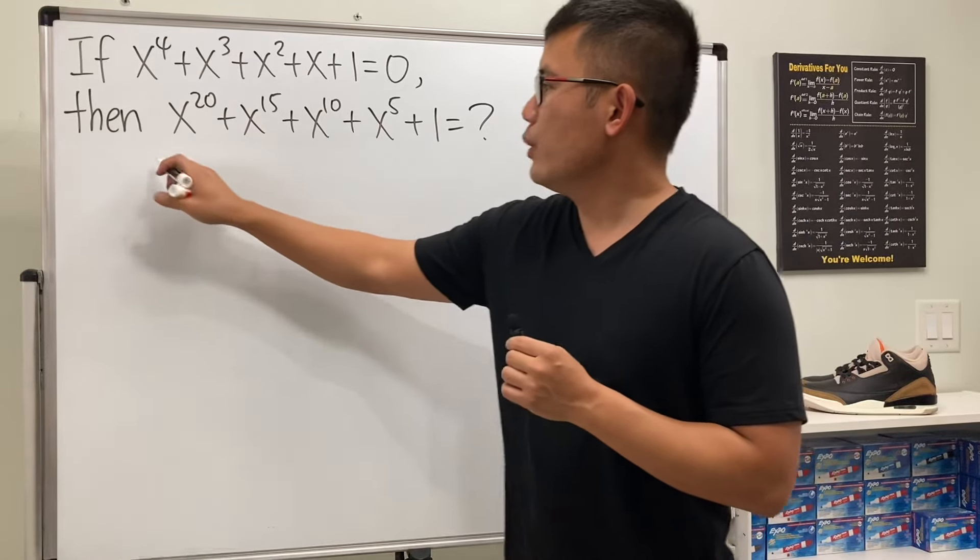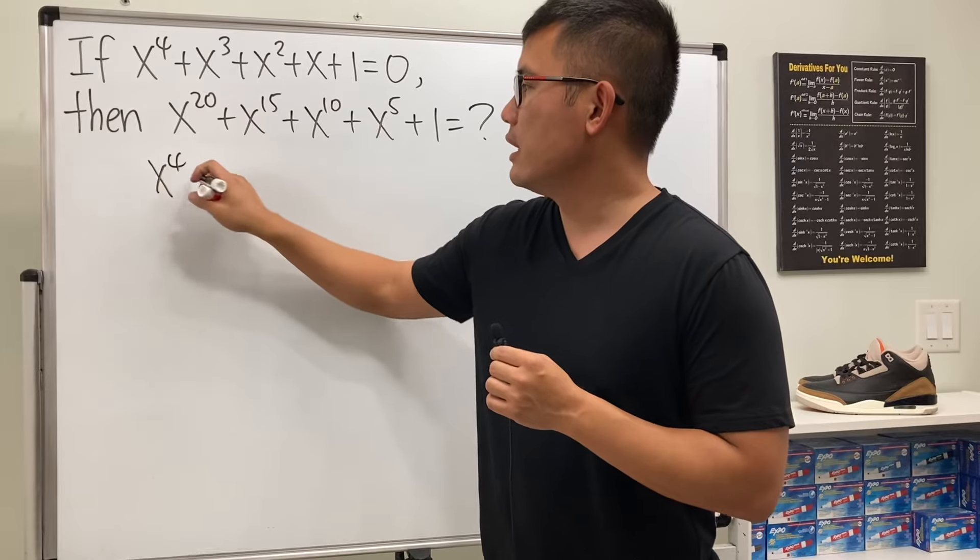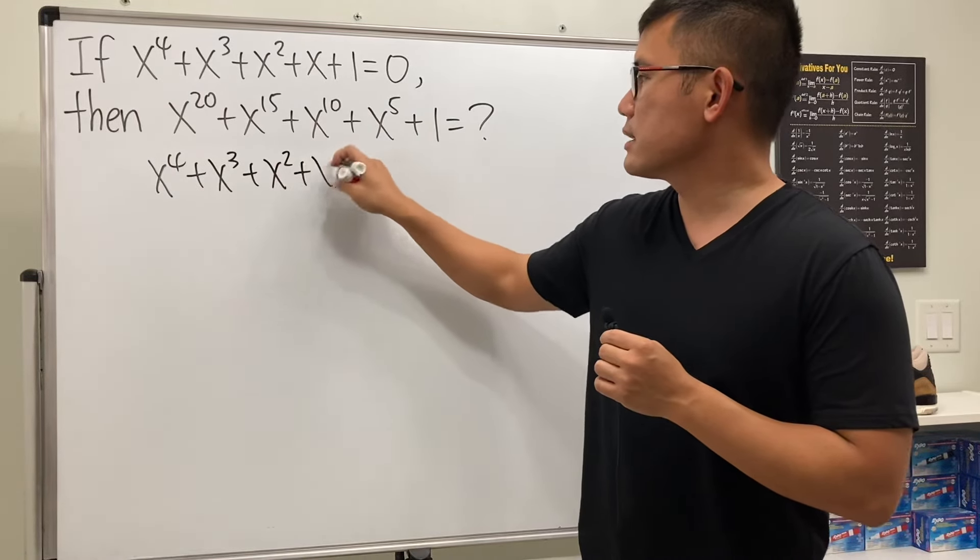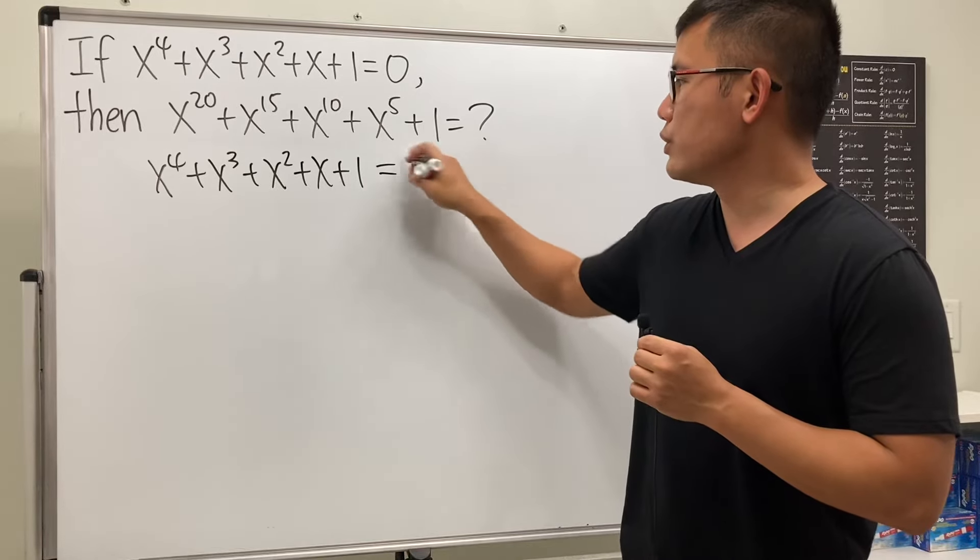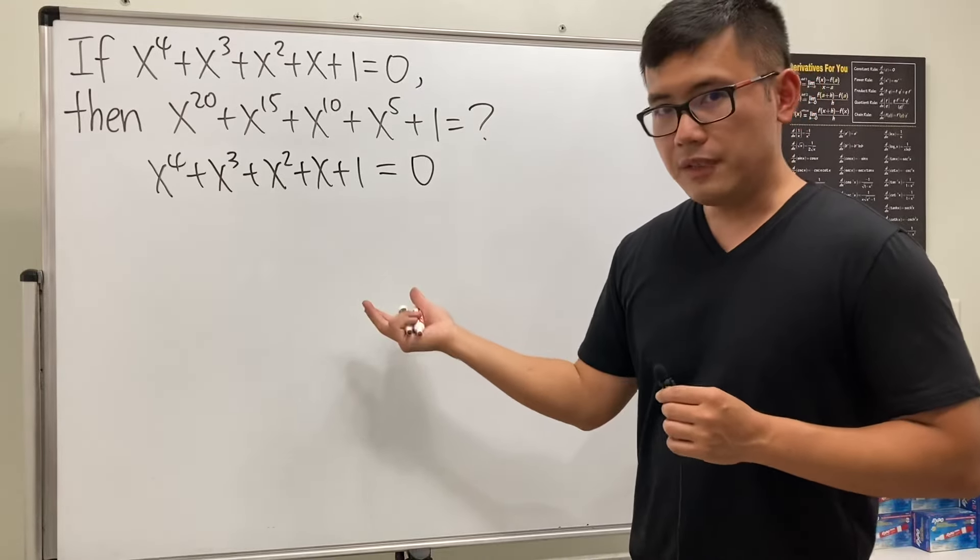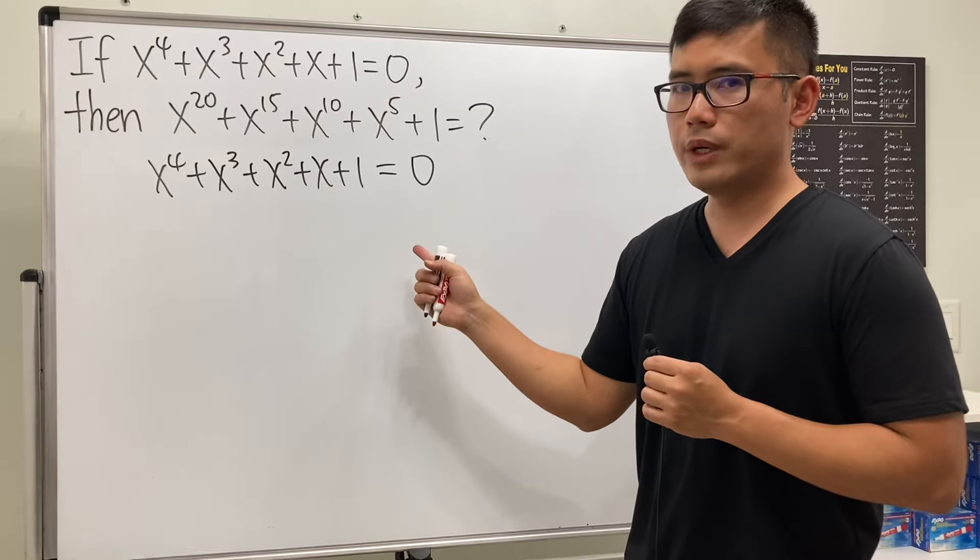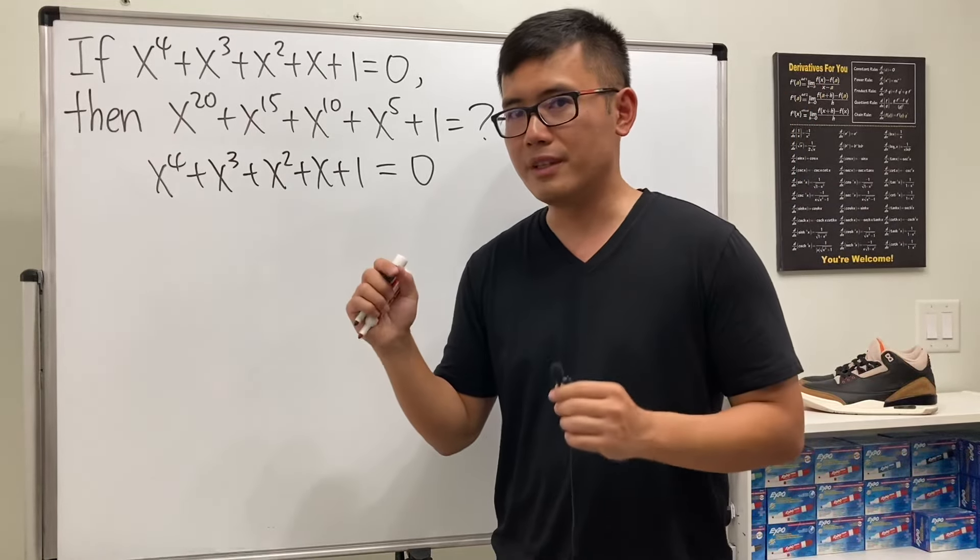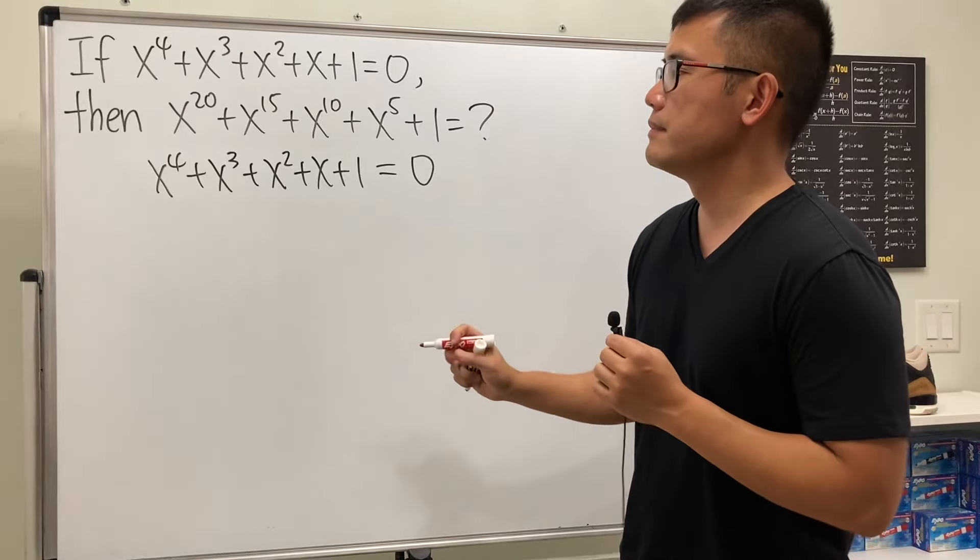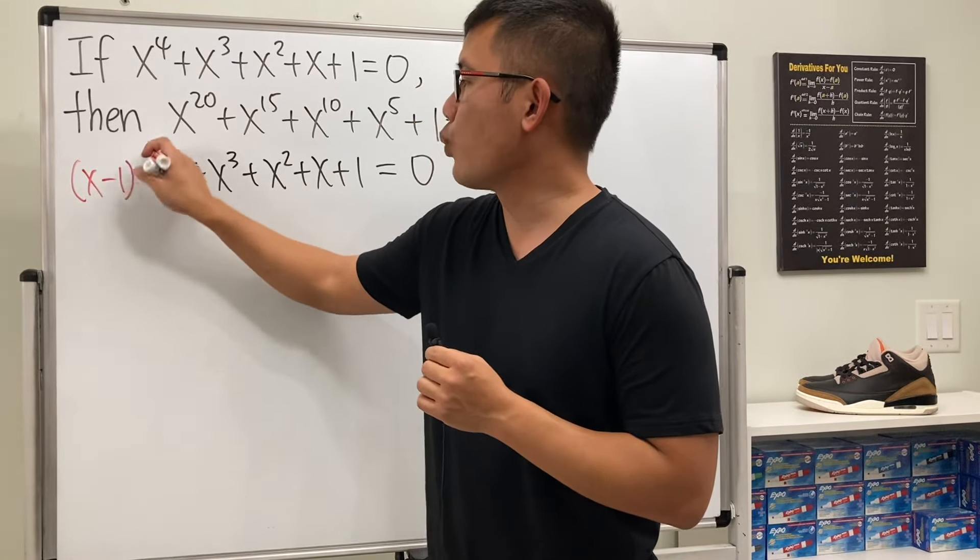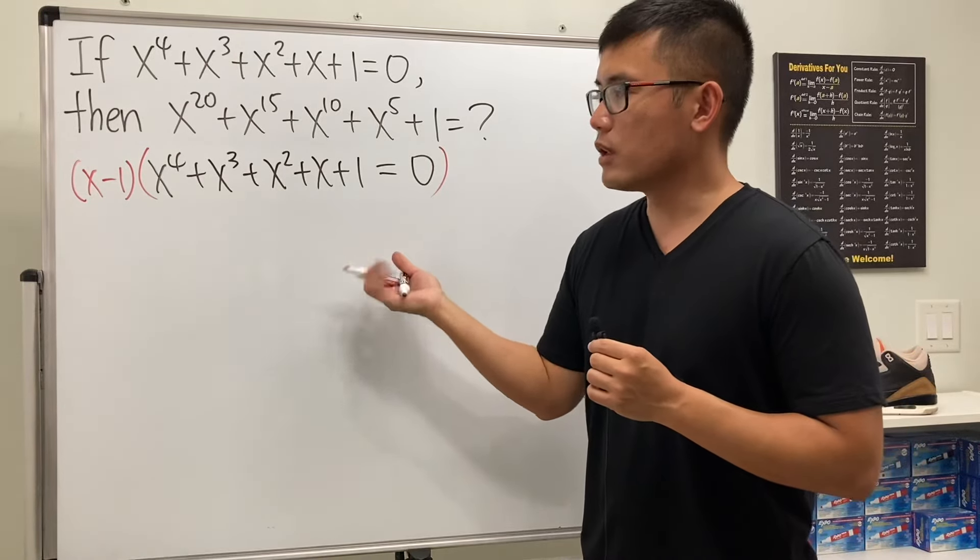Right here, notice how the equation is super nice: x^4 + x^3 + x^2 + x + 1 = 0. I have another video showing you how you can solve x right here, which is a super cool way. Go ahead and check that out; link will be in the description. But right here, let's multiply both sides by (x - 1).